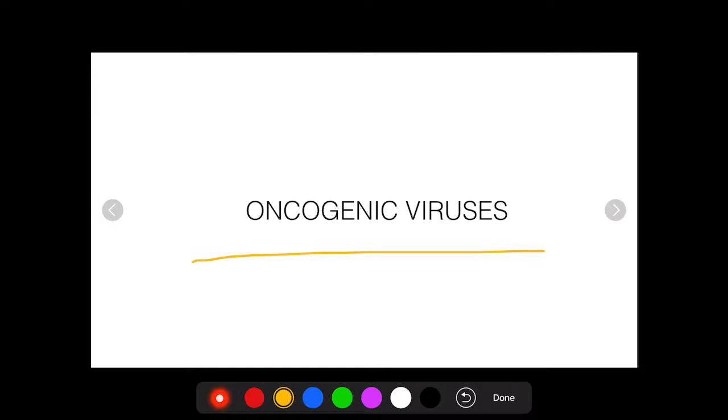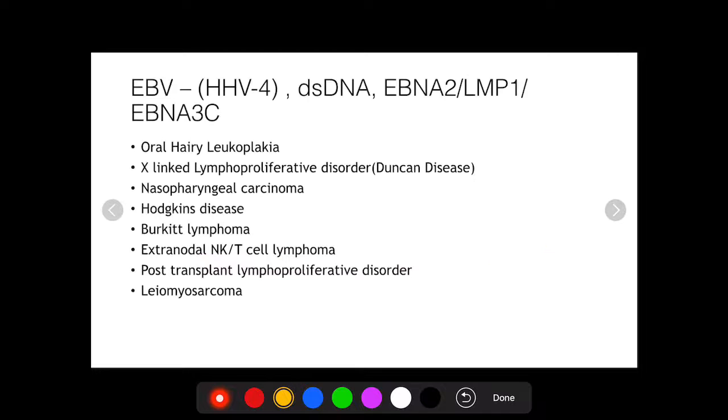The first oncogenic virus that I'm going to discuss today is the Epstein-Barr virus. It's the most important oncogenic virus that can be asked in any entrance examination. Epstein-Barr virus is human herpes virus 4. It belongs to the family Herpesviridae and since it belongs to this family, it's a double-stranded DNA virus. It's also enveloped.